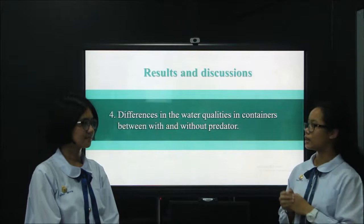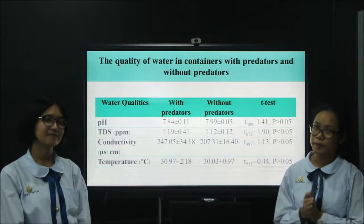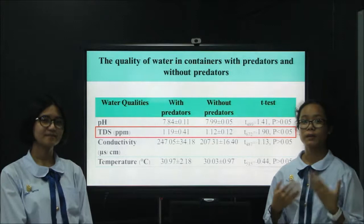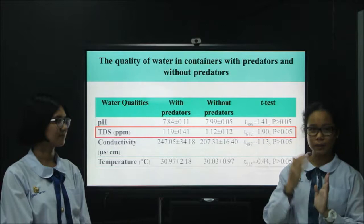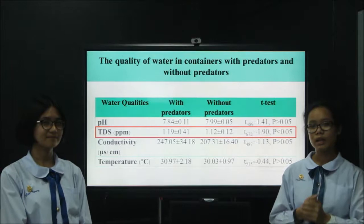Next, we studied the difference in water qualities between containers with and without predators. This table shows the quality of water in containers with predators and without predators. We found that only TDS has a significant difference between containers with predators and without predators. This may be caused by the interaction between the mosquito larvae and the predators, as the water is almost always moving, so TDS in containers with predators is higher than in containers without predators.